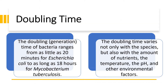Doubling time is the time required for each cell cycle to be completed to get the cell doubled. The doubling time of bacteria ranges from as little as 20 minutes for E. coli to as long as 18 hours for Mycobacterium tuberculosis. It varies not only with species but also with the amount of nutrients, the temperature, the pH, and other environmental factors.